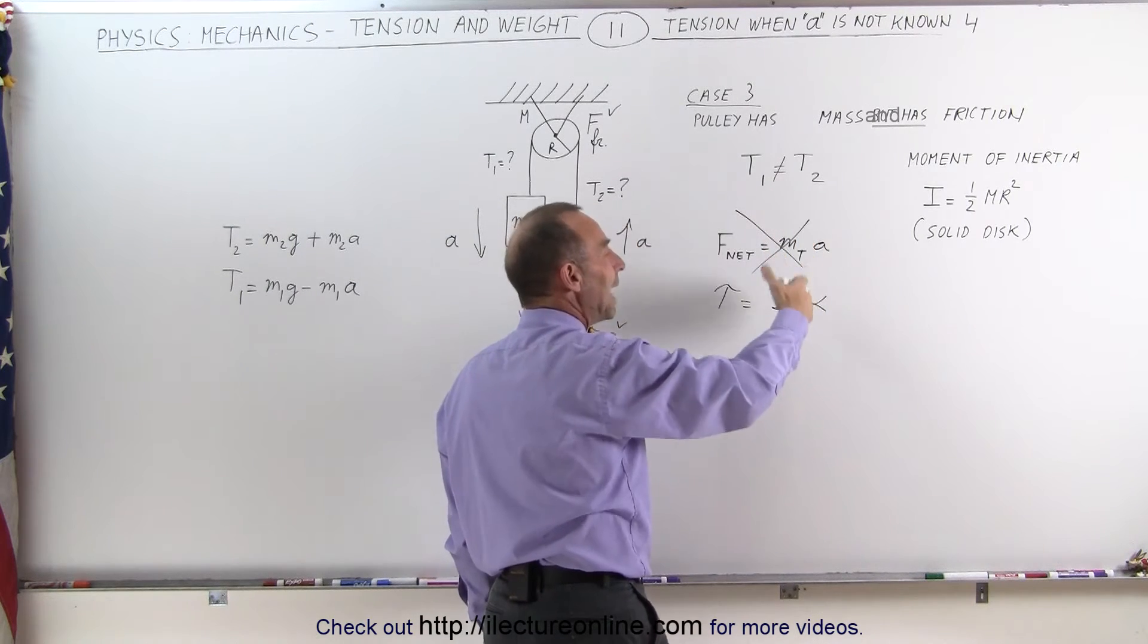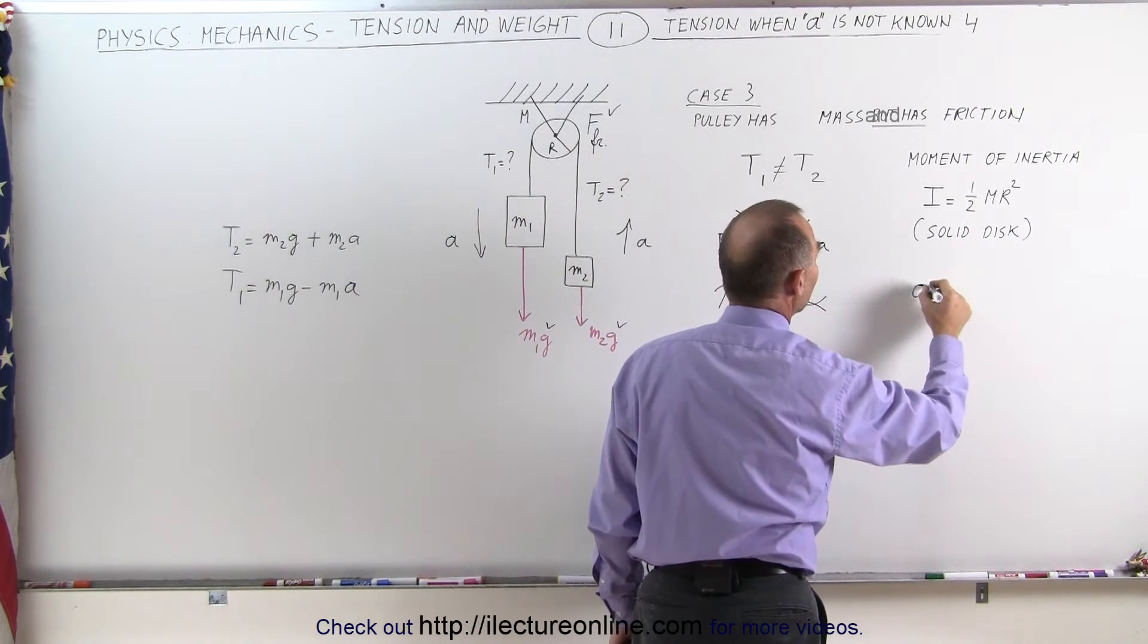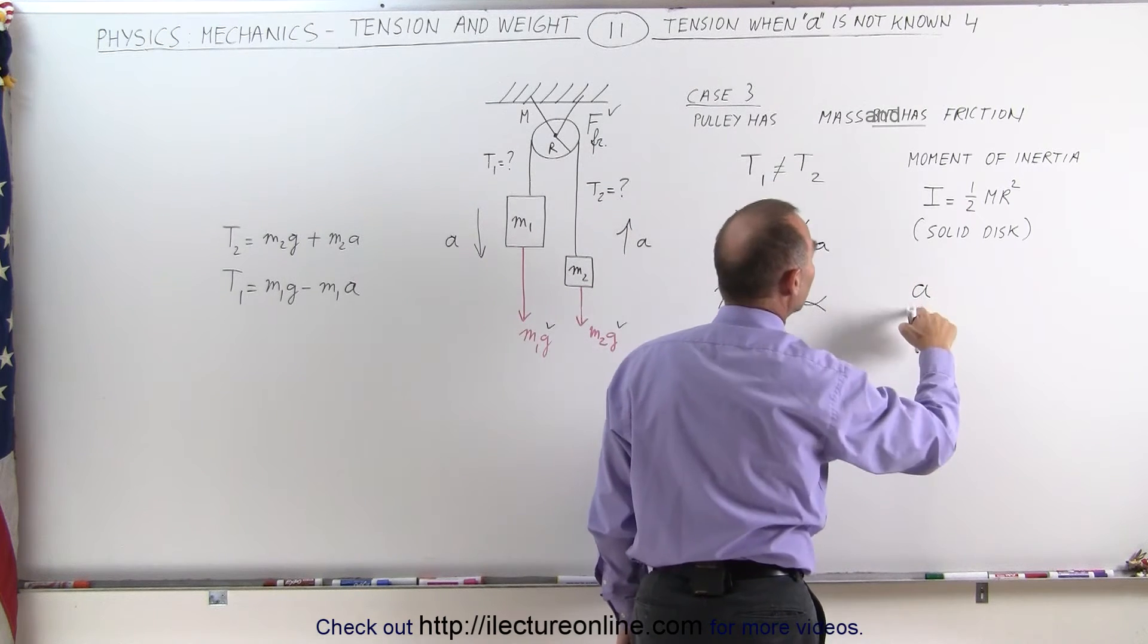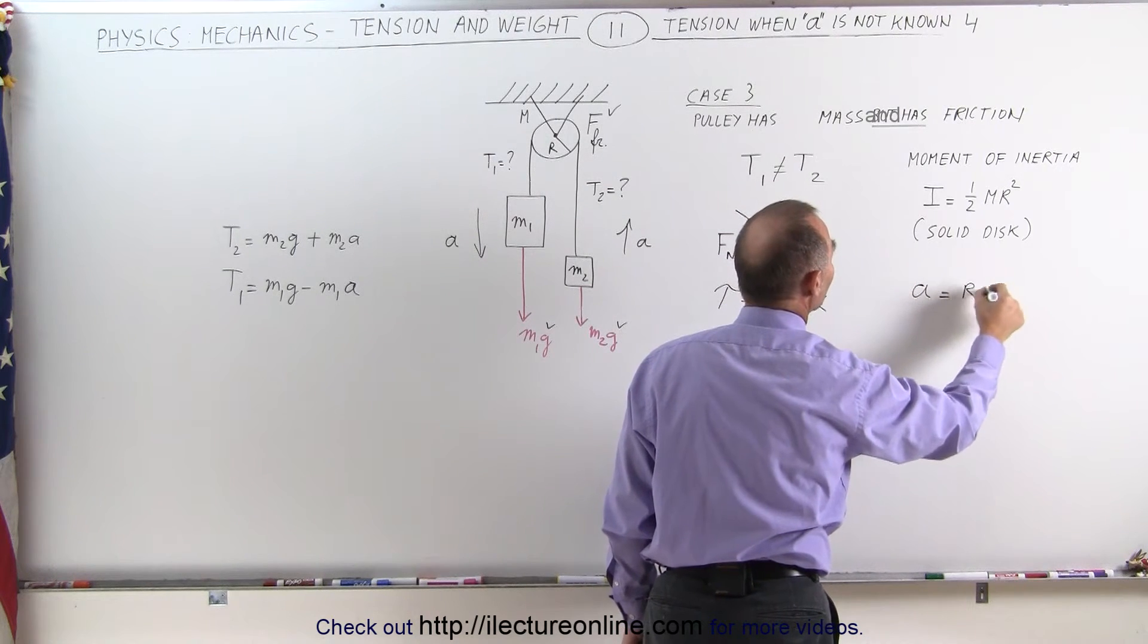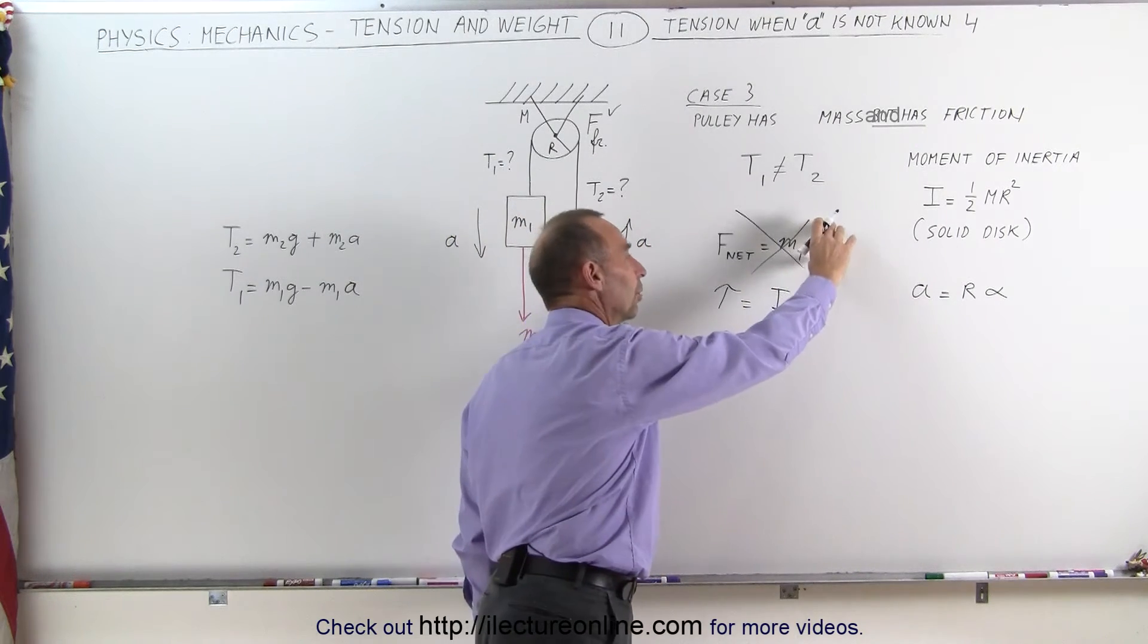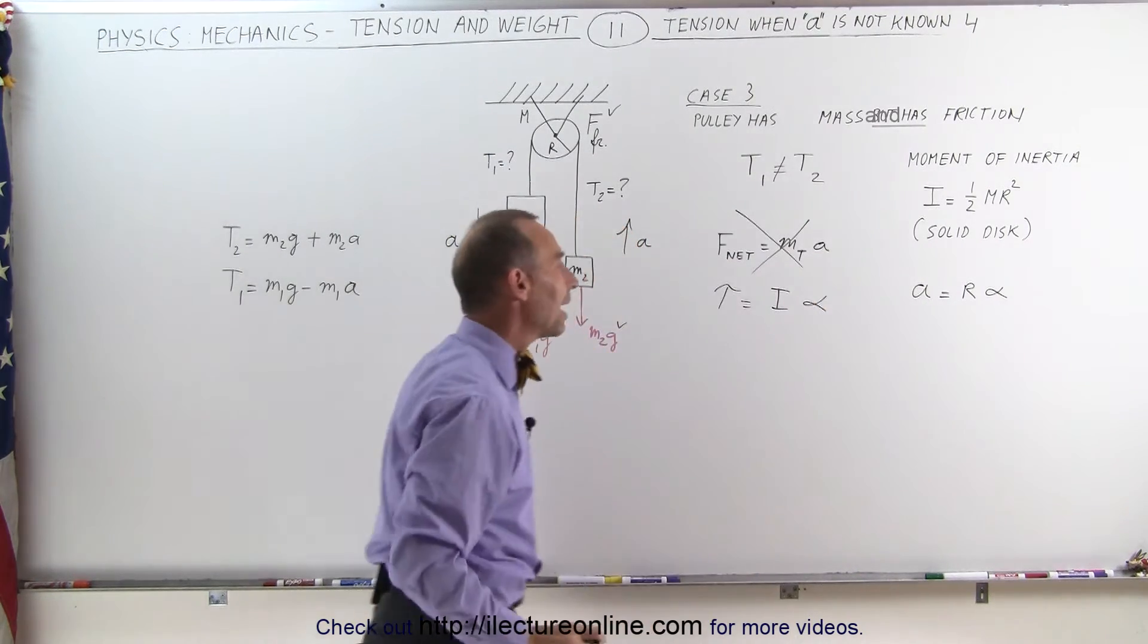The relationship between A and alpha is that the acceleration, the linear acceleration, is equal to the radius times the angular acceleration. So that's the relationship between the linear acceleration and the angular acceleration.